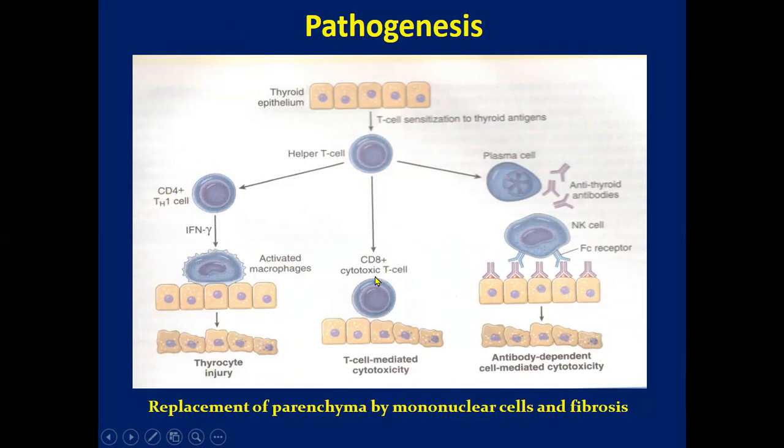If CD8 cells are involved, then cytotoxic T cells lead to T cell-mediated cytotoxicity. Additionally, plasma antibodies against antithyroid antigens and natural killer cells attach to the Fc receptor of thyroid cells, leading to antibody-dependent cell-mediated cytotoxicity.